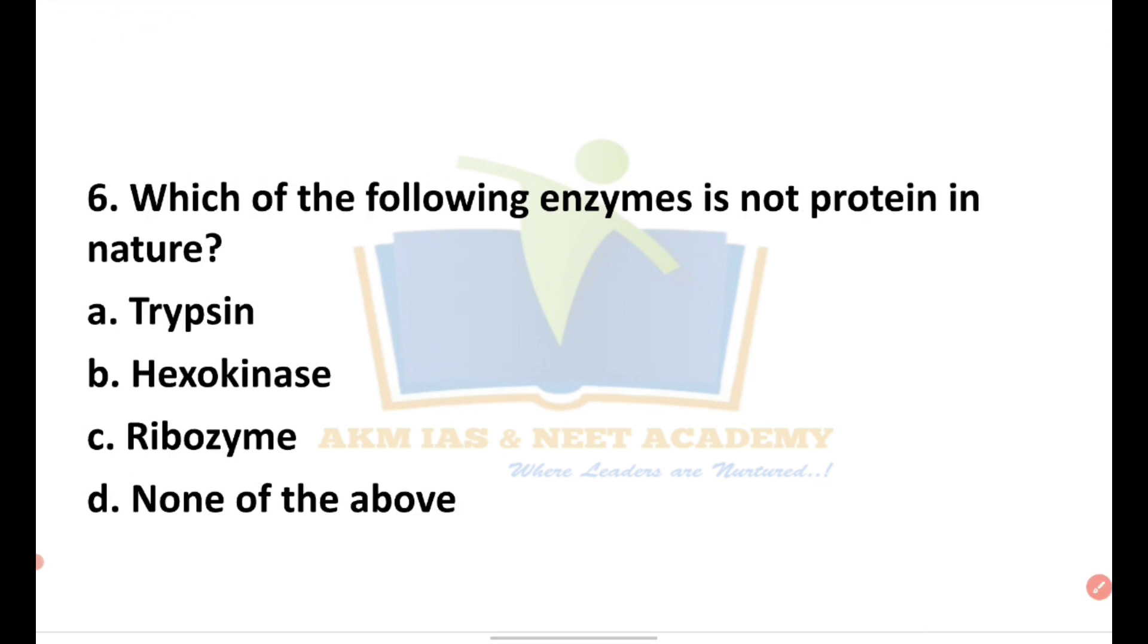Which of the following enzymes is not protein in nature? Options: a) trypsin, b) hexokinase, c) ribozyme, d) none of the above. Trypsin is a protein, hexokinase is a protein, but ribozyme is an enzyme that is not protein in nature. So the answer is C.